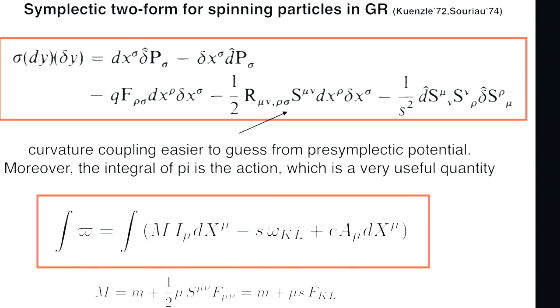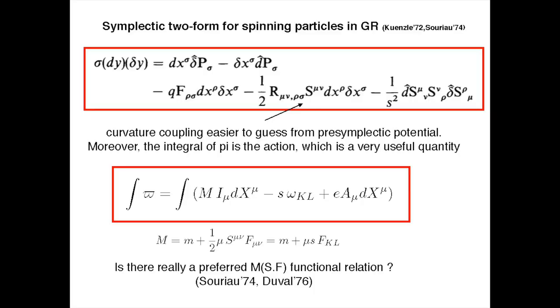I would be interested — as I have seen many discussions by Souriau, Duval, and Künzle — about the question of what is the correct functional relation between the mass of an electron with magnetic moment mu as a function of S dot B — equivalently S_mu_nu F^mu_nu — whether it has to be linear, or whether it is the square of the mass which should be linear. I would be happy to know if there are good reasons to prefer one over the other.